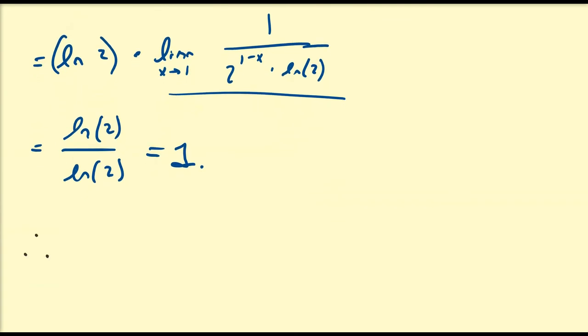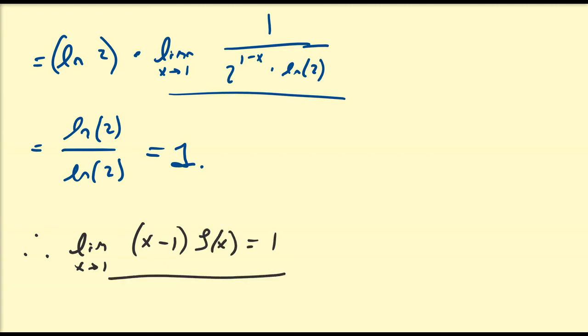Therefore, in conclusion, the limit as x approaches 1 of (x minus 1) times zeta of x is equal to 1.